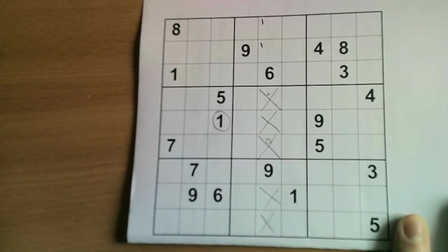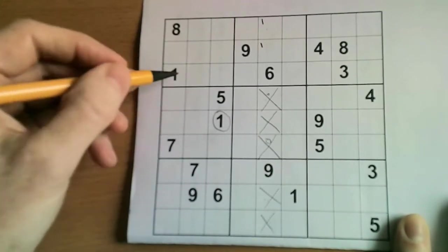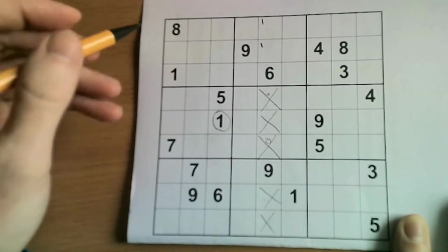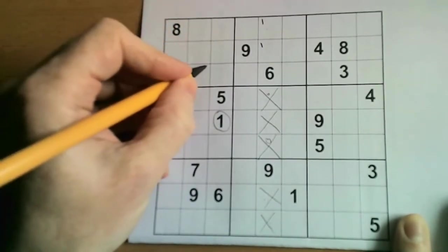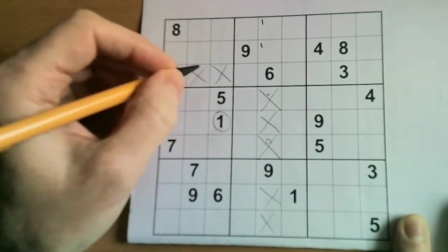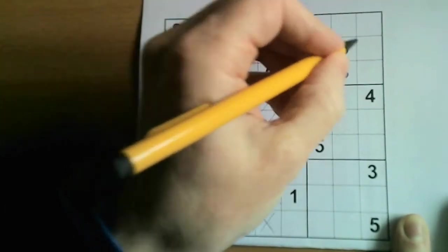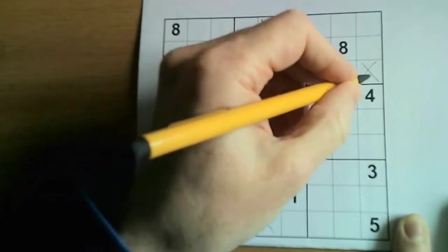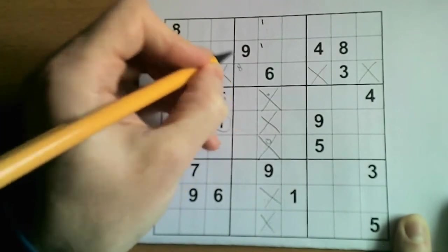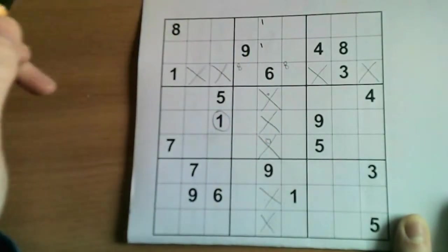Now let's have a look at the third row and let's ask ourselves where the eight can go. So again just using Standard Sudoku, it can't go here or here because there's an eight in the box. And it can't go here or here because there's an eight in this box. So now in a Standard Sudoku, we've instantly narrowed down the eight to here or here.